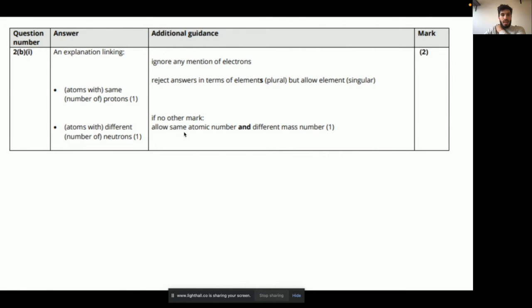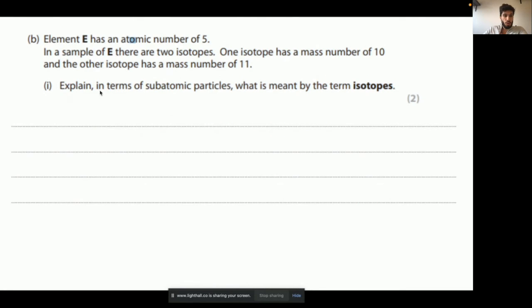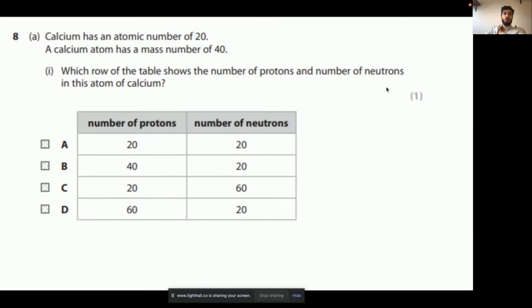If no other mark, allow same atomic number and different mass number. That's why I don't like teaching that at school. Look, you get one mark if you say that. So, don't... You have to be more specific. It's about the number of protons and neutrons. Why? Look what the question says. Excuse me. In terms of subatomic particles, you need to be talking about the protons and neutrons to get this mark. So, that's why I always teach isotopes as the same number of protons, different number of neutrons. Boom, let's move on.